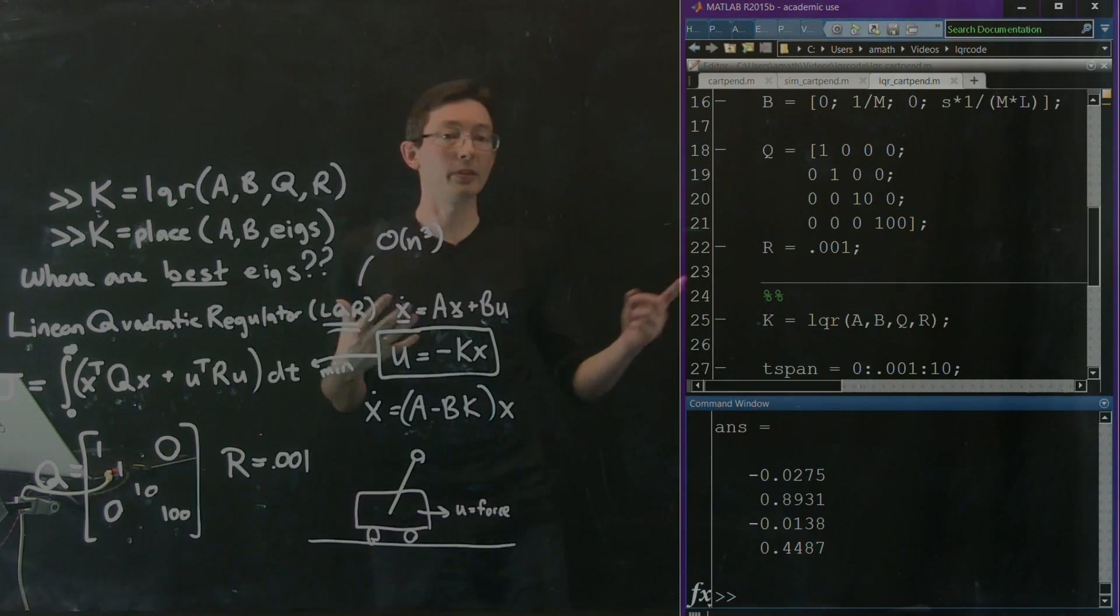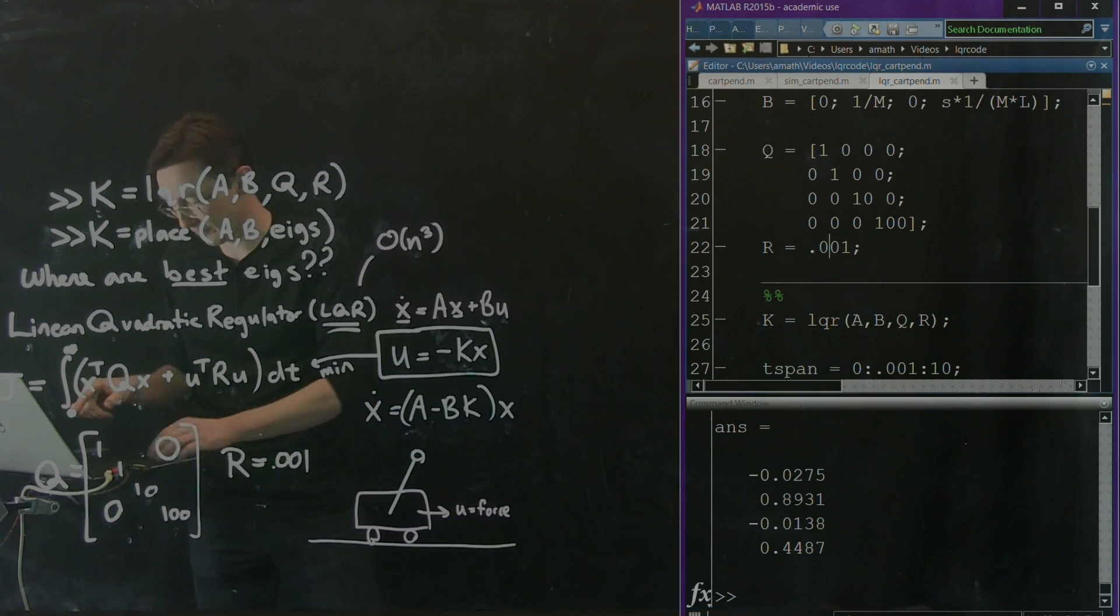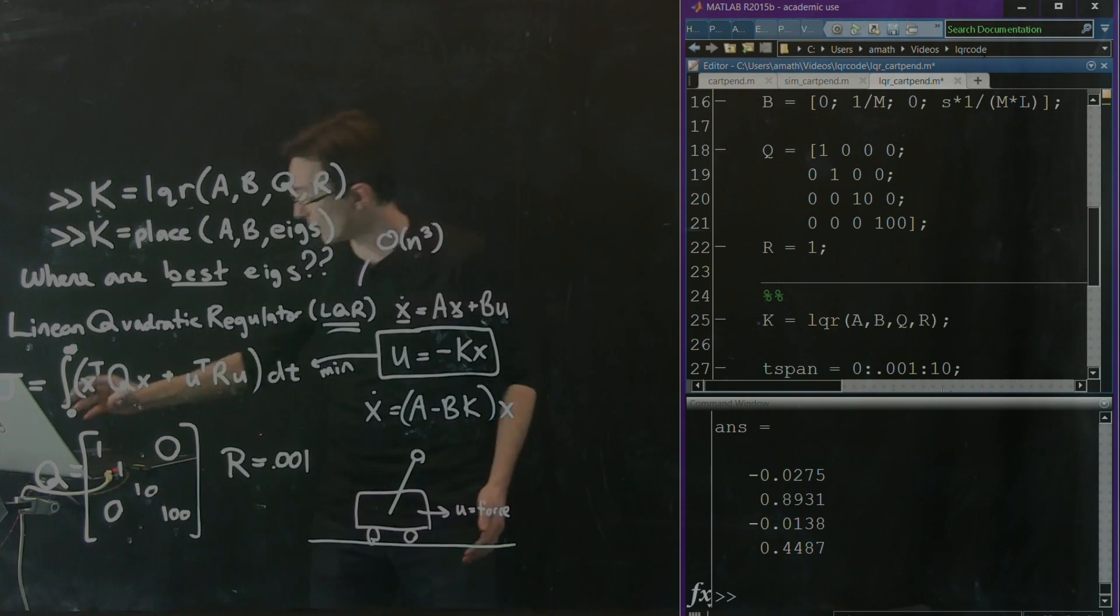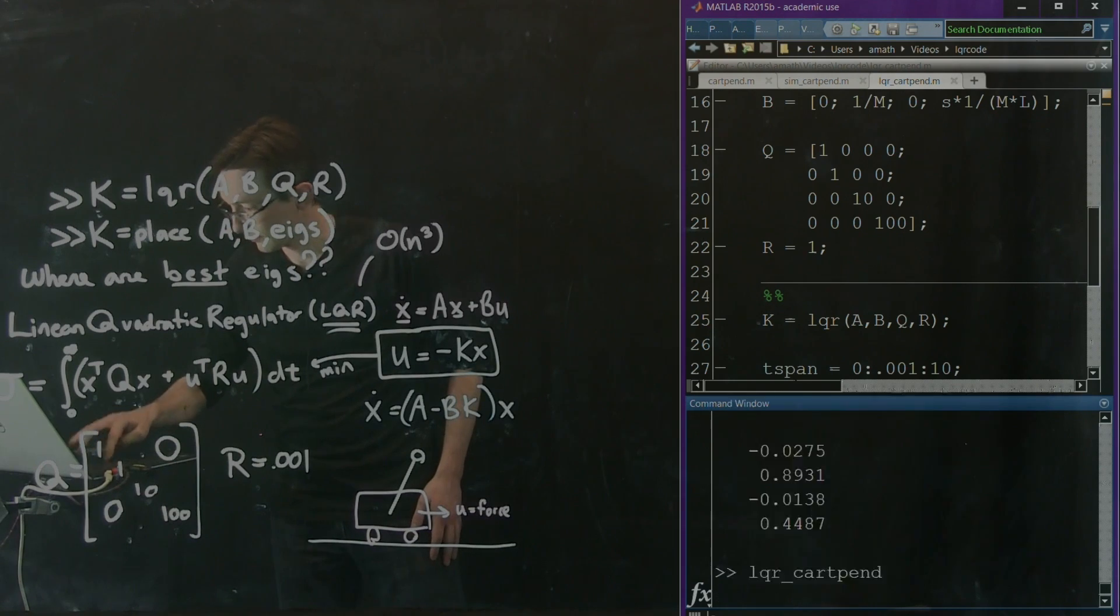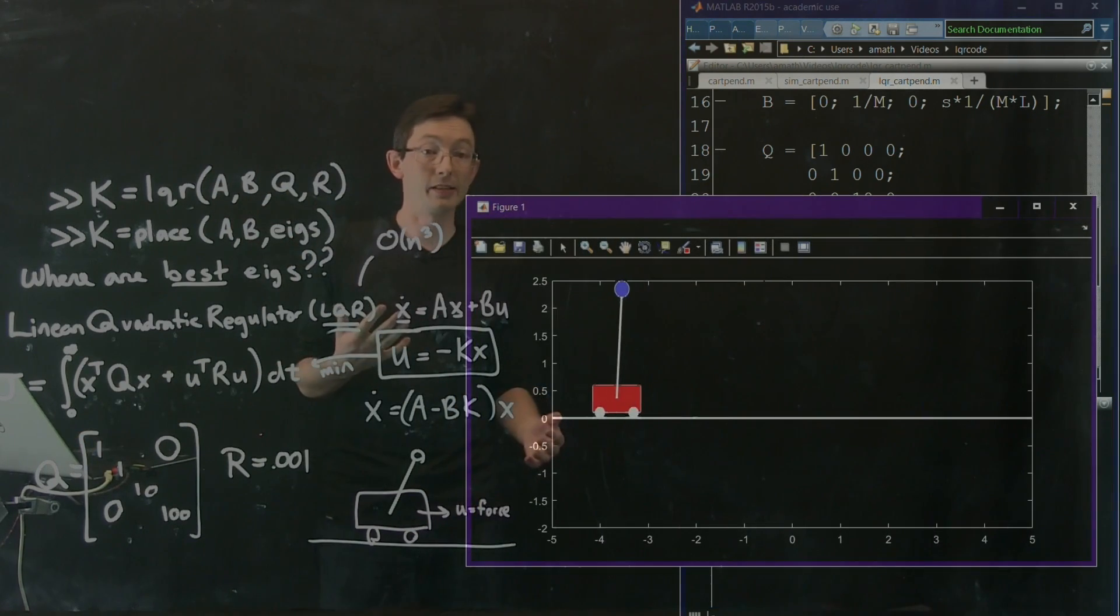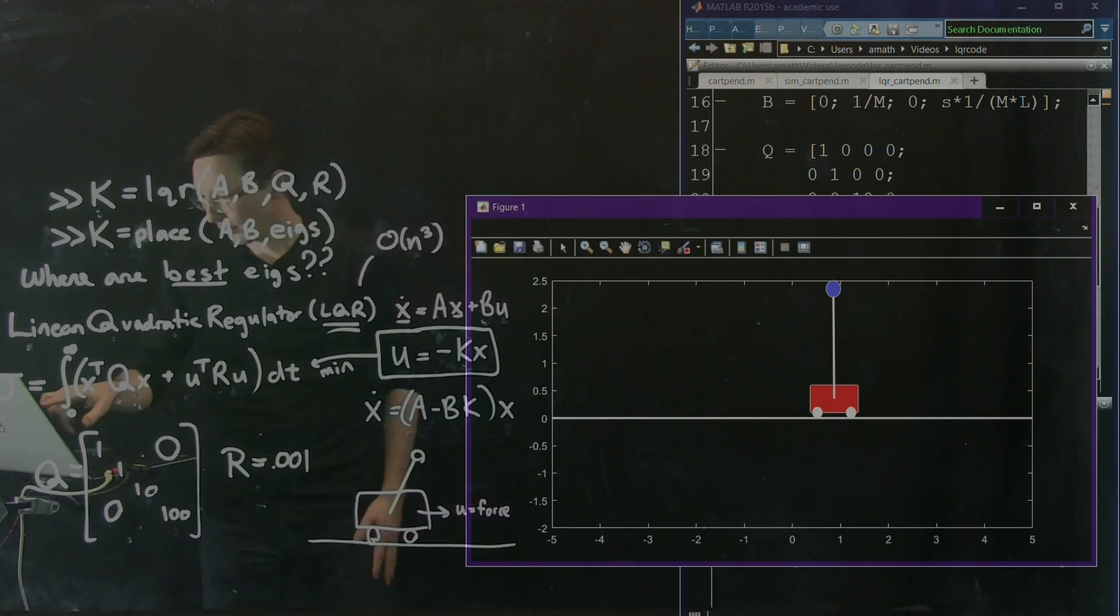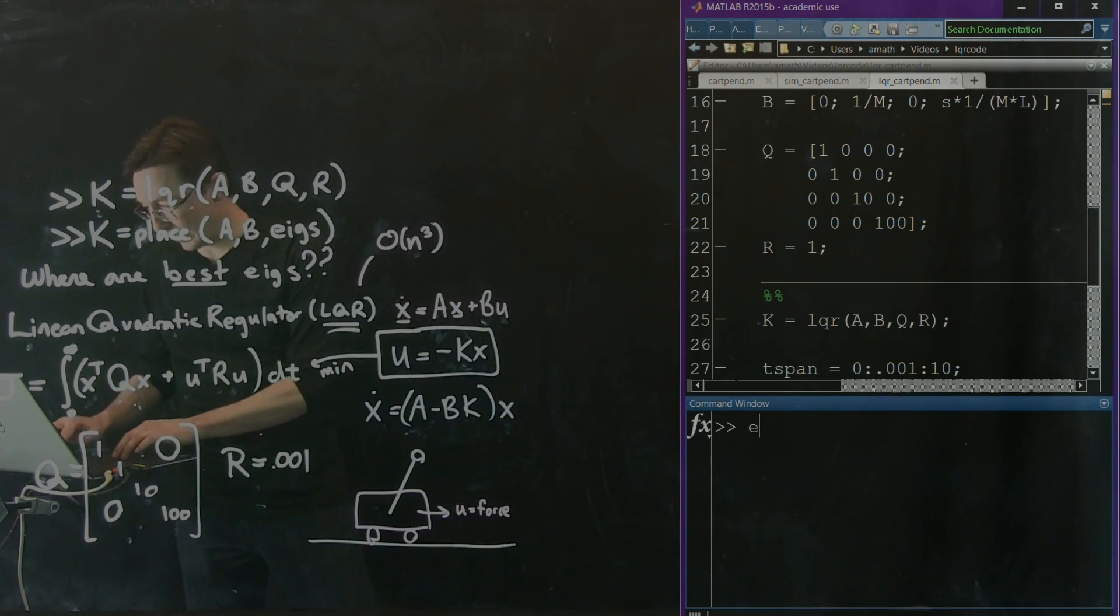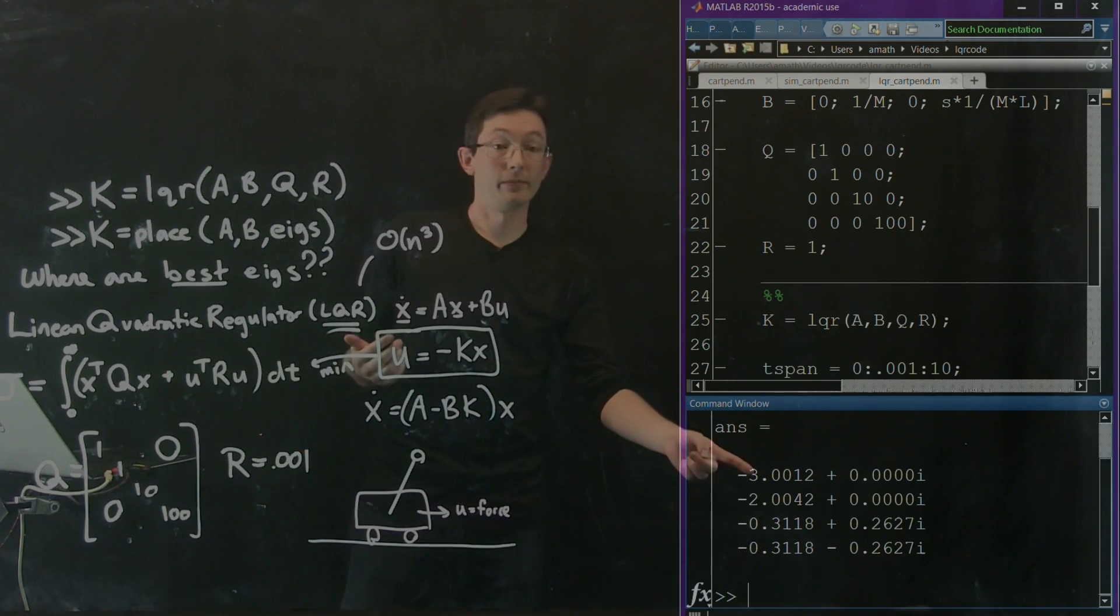And if you wanted to play around with this, what I would recommend is try making R more expensive. So let's do that. Let's say we're going to make R actually kind of expensive. So I'm going to save this and run it. It's not going to be as aggressive. It takes, it's much slower. And if I look at my IGs, they're a lot less aggressive, right? They're different and they're less aggressive.